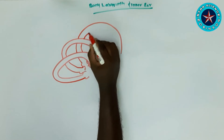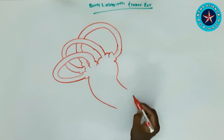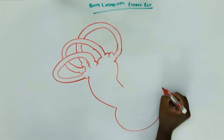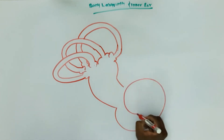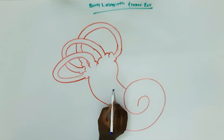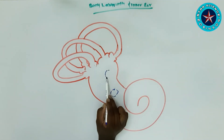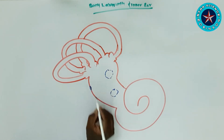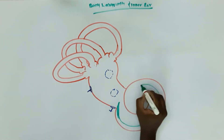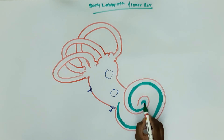In our diagram we are now seeing the semicircular canal, the vestibule, and the cochlea. The next circle near to the cochlea is the cochlea itself. We are also seeing the utricles, which is near to the semicircular canal.